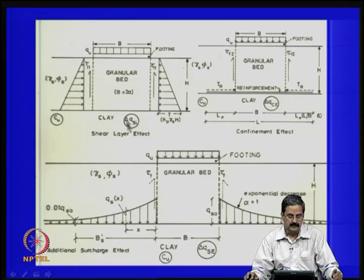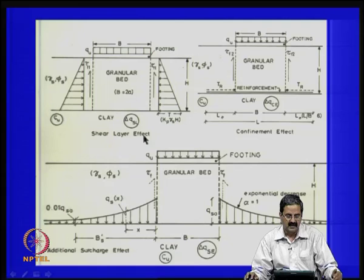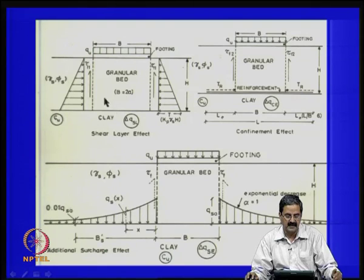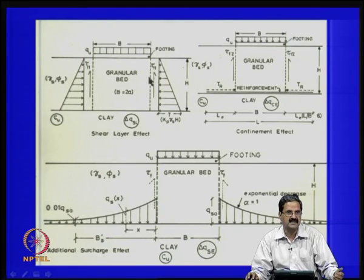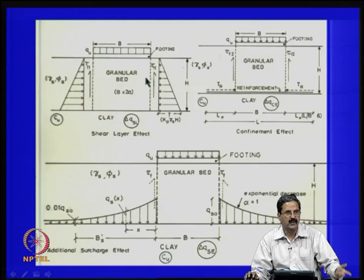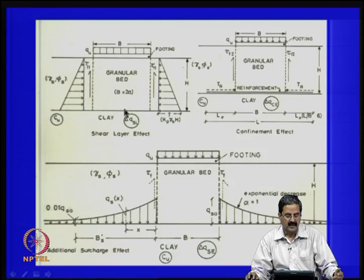The three mechanisms are: one is called the shear layer effect; the other is the confinement effect due to interaction between the sand and reinforcement in the sand layer; and the third is additional surcharge effects. You have a granular soil layer over a clay bed, and when you have a foundation, the tendency for material is to move laterally, but there is passive resistance in the sand given by K_p × gamma × H, rather than K_a × gamma × H, which is active pressure. This passive resistance is what we call the shear layer effect.